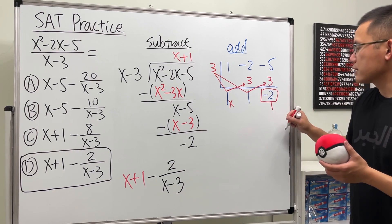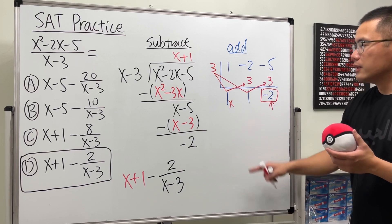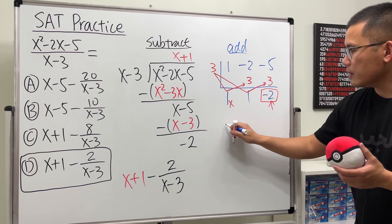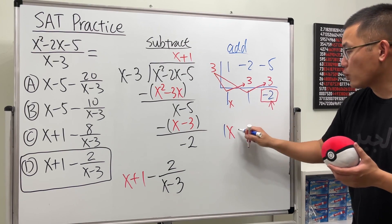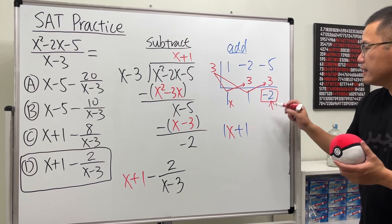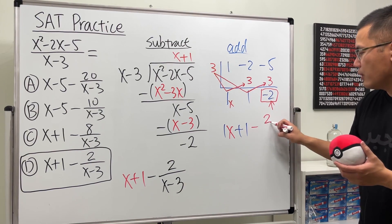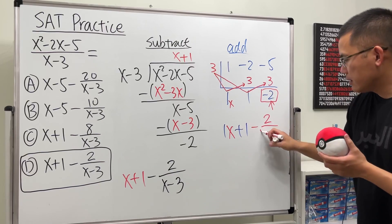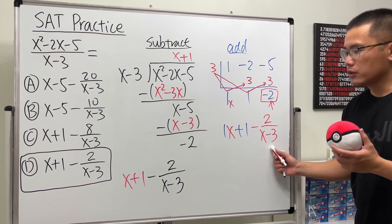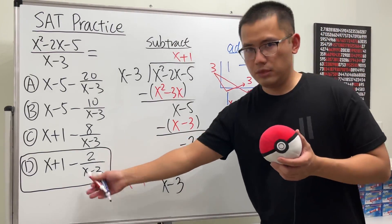So perhaps I'll put a special box right here. It's a remainder. So we have x, 1x technically, and then plus 1. And then here we have the minus 2 over the original denominator, which is x minus 3. So of course, we have the same answer, D.